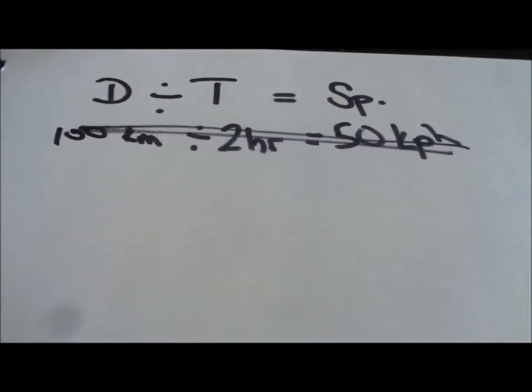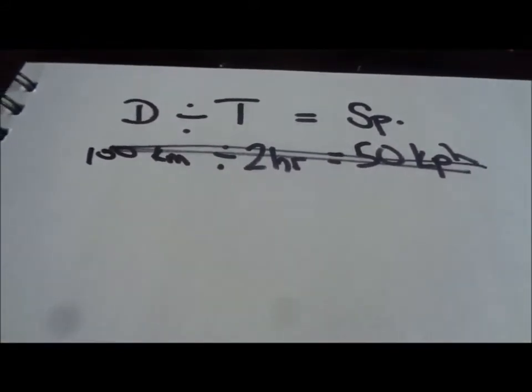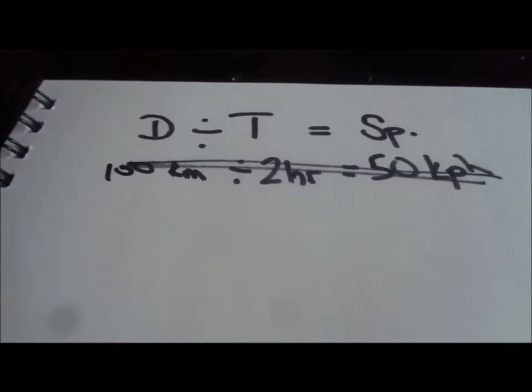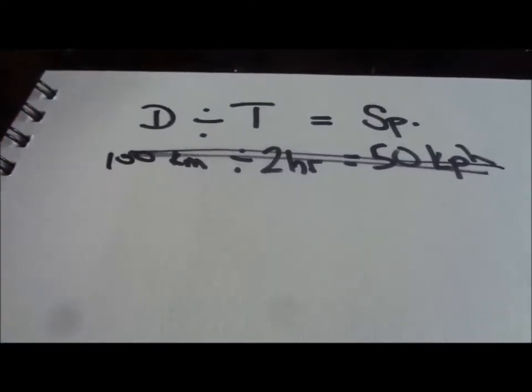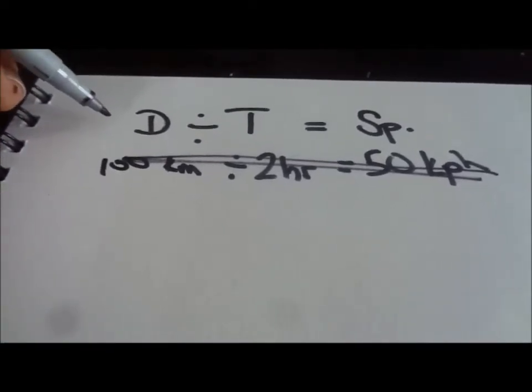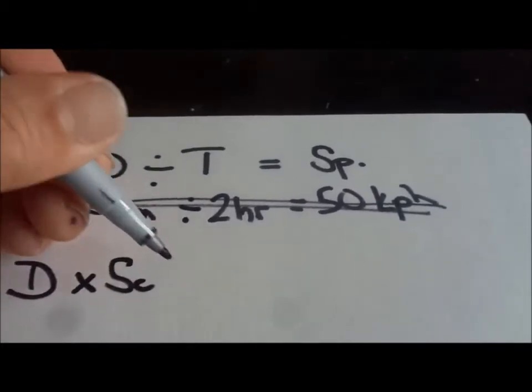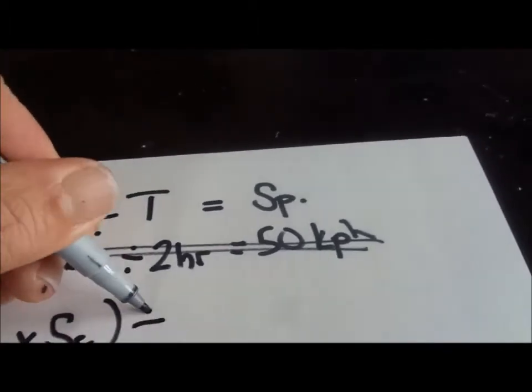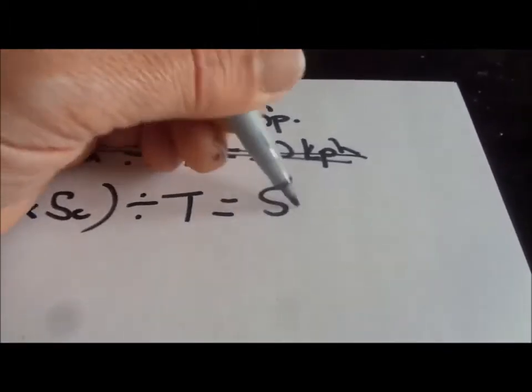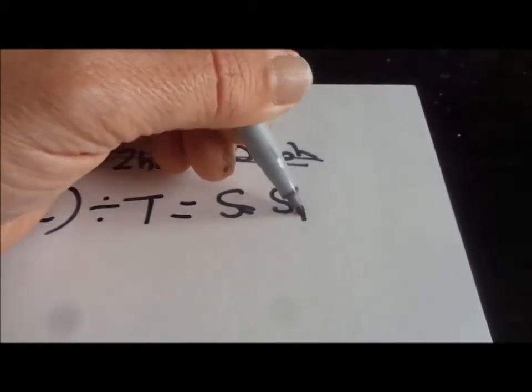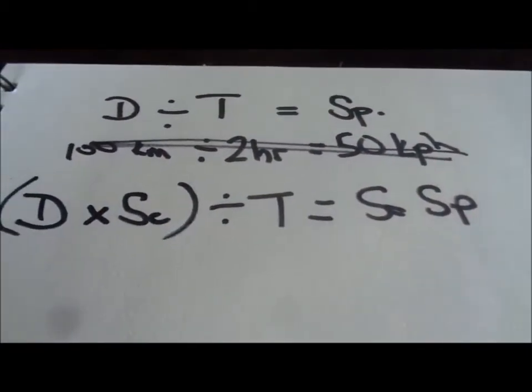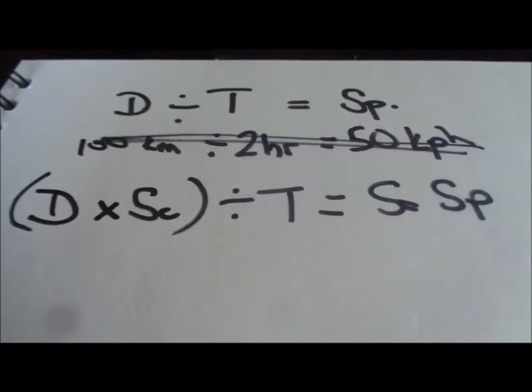We've got a slightly more difficult one. The only thing that's going to make ours more difficult is we're working in scale. So we add another figure to this formula, which is the distance times scale then divided by time. And that should give us our scale speed. This makes sense so far, doesn't it?